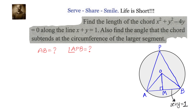Since we have been given the equation of the circle, we will find the centre and the radius. We can also calculate the perpendicular distance from the centre to the chord. Using OA and OM, we can apply Pythagoras' theorem to find AM, then double it to get AB. We can also find angle APB because we know angle AOB equals 2 times angle APB.